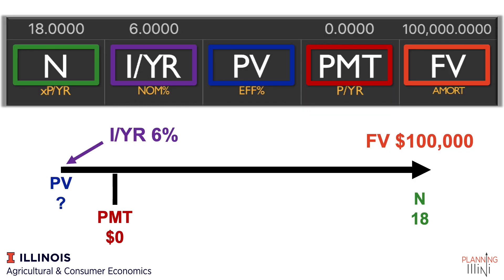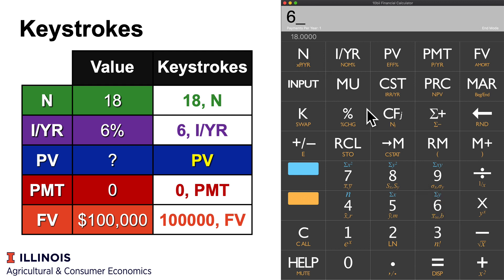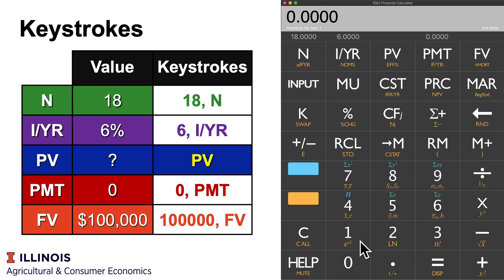Let's go ahead and map it on a timeline. 6 is I/YR — we can earn 6% every year. Assuming the calculator is set to one period per year, we would say 6 I/YR, then 100,000 FV, and 18 annual periods to get there. The keystrokes would be: 18 for N, 6 for I/YR, 0 for payment since we're not adding regularly, and our goal of 100,000 for Future Value.